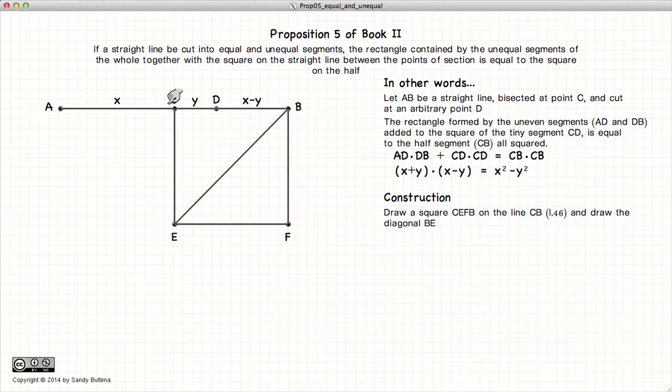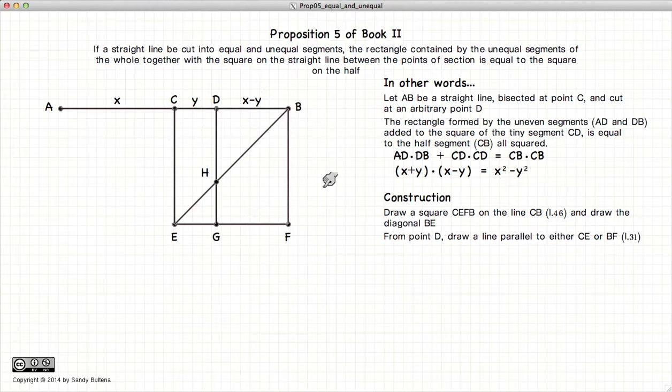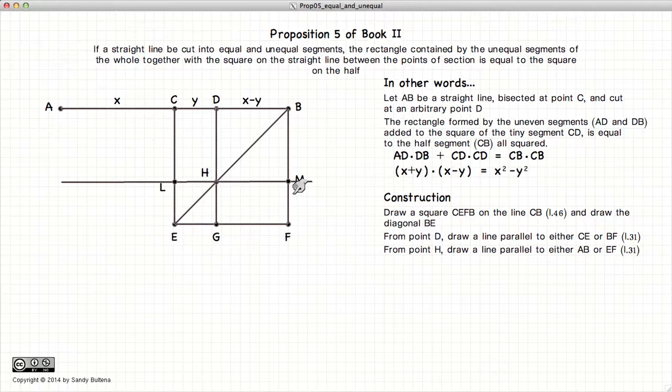Next we will draw a line parallel to CE through the point D. And draw another parallel line to EF through the point H. And finally draw a line parallel to CL through the point A.